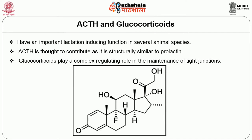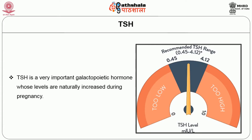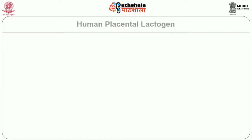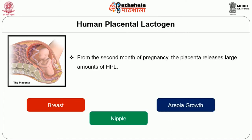Glucocorticoids play a complex regulating role in the maintenance of tight junctions. The next hormone is thyroid stimulating hormone (TSH), a very important galactopoietic hormone whose levels are naturally increased during pregnancy. Another hormone involved in reflex action is human placental lactogen (HPL). From the second month of pregnancy, the placenta releases this hormone in larger quantities. This hormone appears to be instrumental in breast, nipple, and areolar growth before birth.